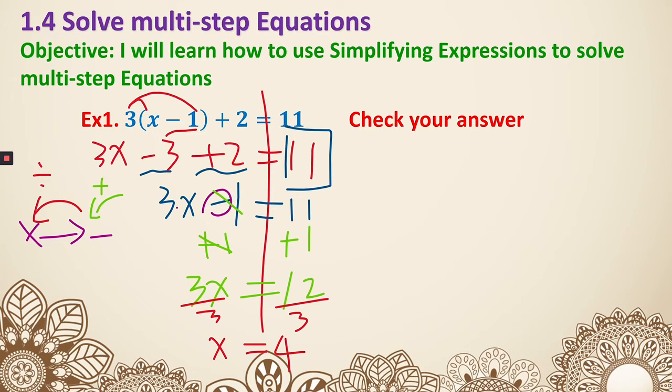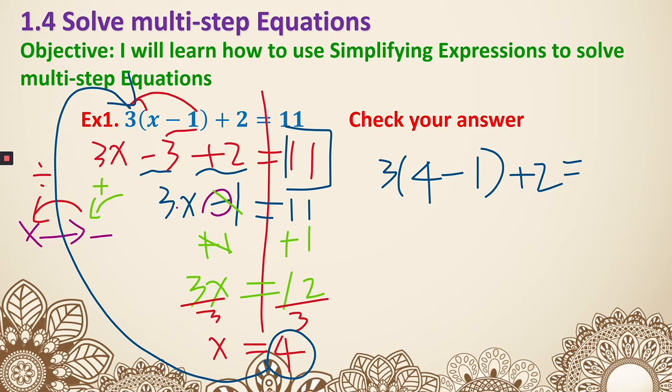Now last thing, we still need to check our answer. I'm going to take this 4 and plug it back into the equation to replace x. So 3 times 4 minus 1 plus 2 equals 11. We're trying to see if it actually equals 11.